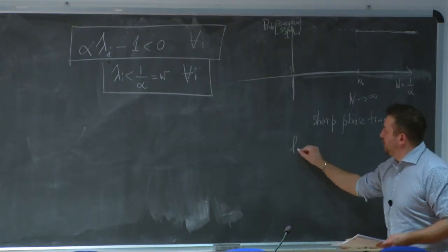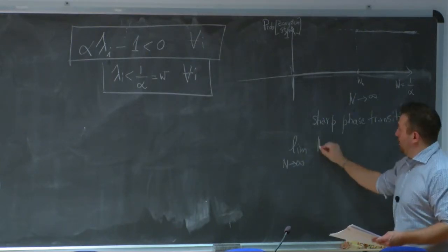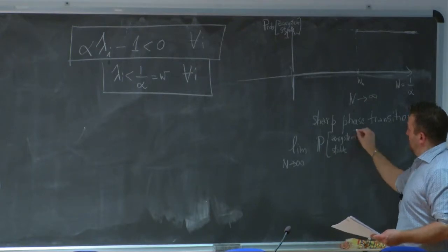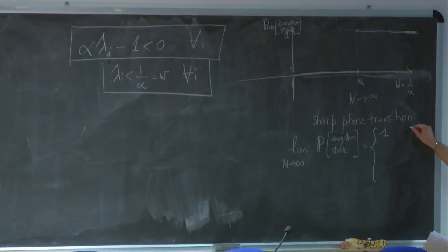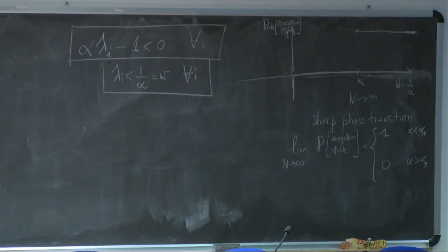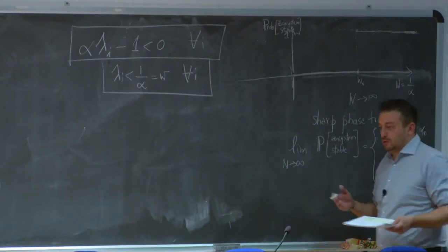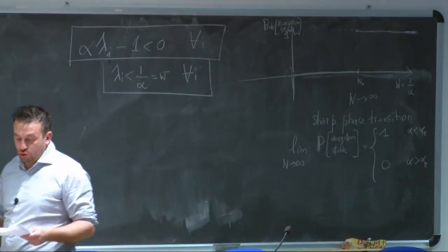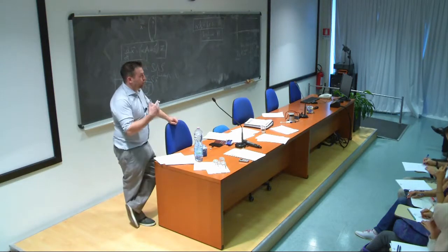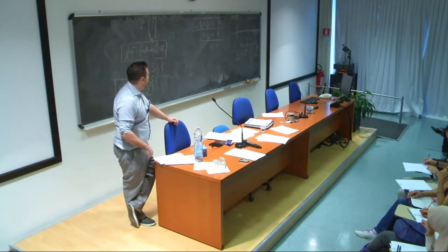The precise statement is: the limit n → ∞ of the probability that the ecosystem is stable is 1 if α is smaller than a certain critical value (w larger than critical), and 0 if α is larger than that critical value. An ecosystem that is almost surely stable will, overnight, when the web of interactions becomes sufficiently strong, turn into a system that is almost surely unstable — a sharp phase transition.